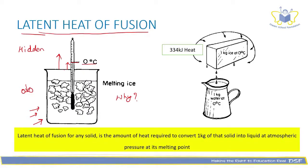Latent heat of fusion for any solid is the amount of heat required to convert 1 kg of that particular solid into liquid at atmospheric pressure at its melting point. The latent heat of ice is 334 kJ, as 1 kg of ice takes up 334 kJ of heat energy to become water. Though both water and ice are at the same temperature — 0°C — the particles in water have more kinetic energy compared to ice.